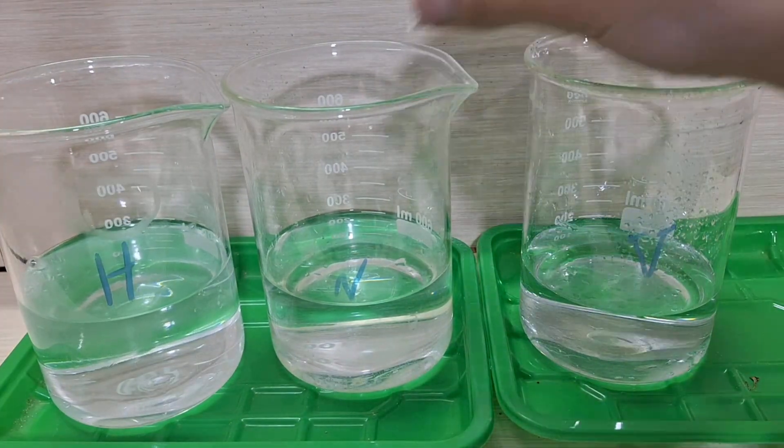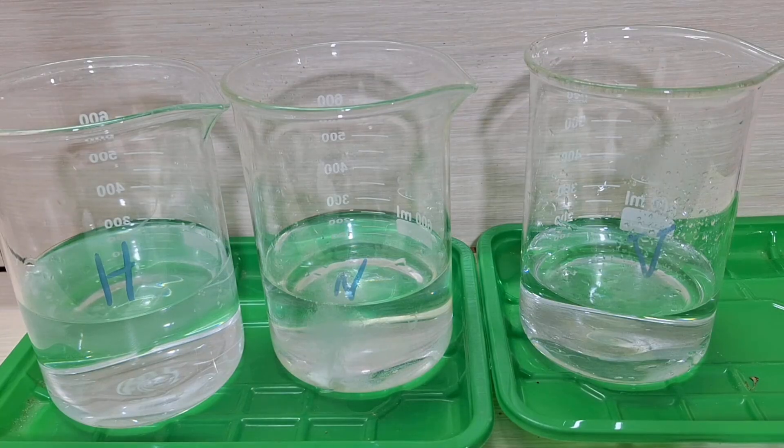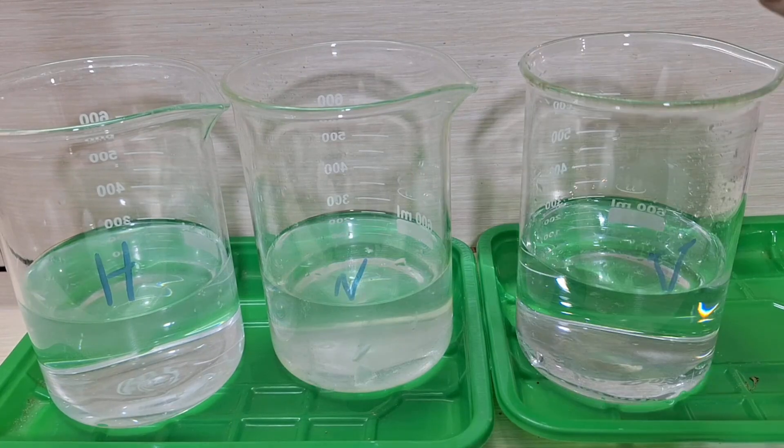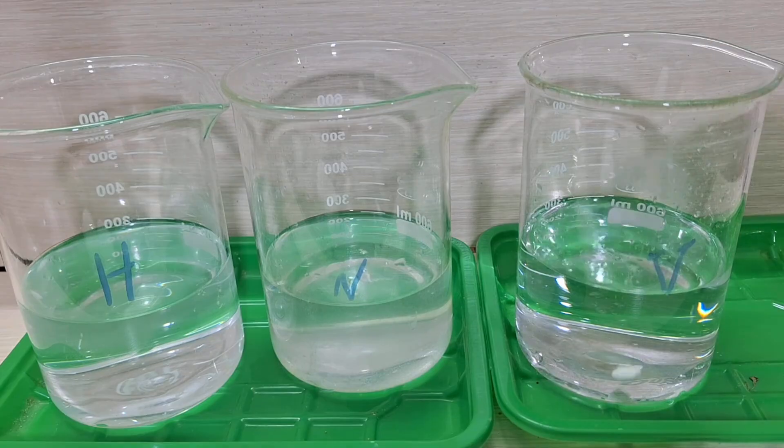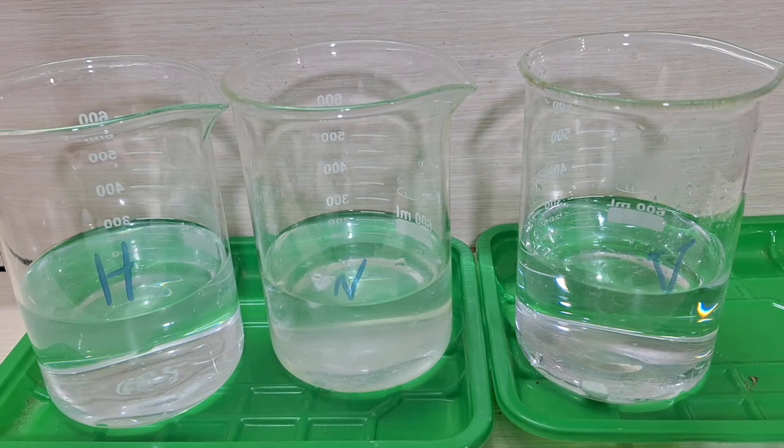So when you dissolve ore containing gold or copper in acid, the lime and calcium compounds in the soil are the first to react. This reaction continues until all the lime is consumed. By the time the acid reaches the gold or copper, it's often too weak to dissolve them.